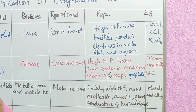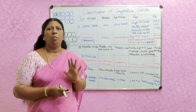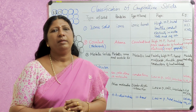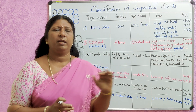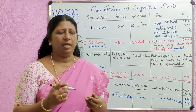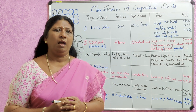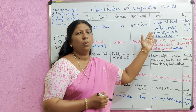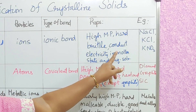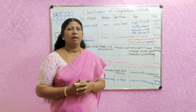They are brittle. In the solid state, ionic solids do not conduct electricity well, but in the molten state they can conduct electricity. The ionic solids conduct electricity in molten state and also in aqueous solution state.